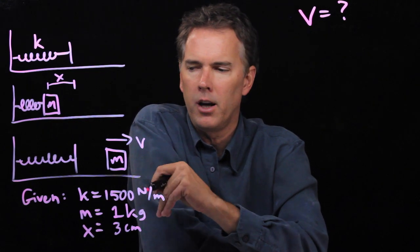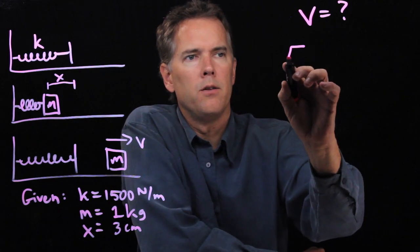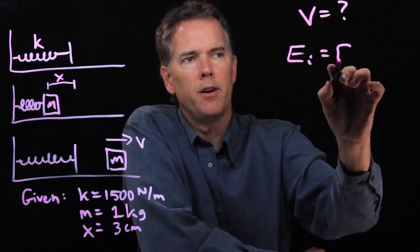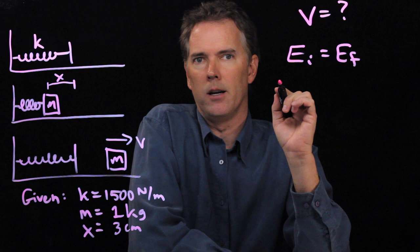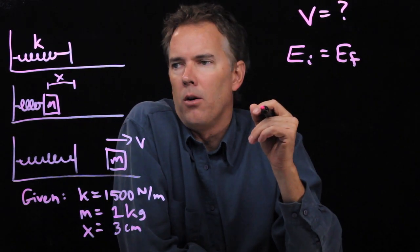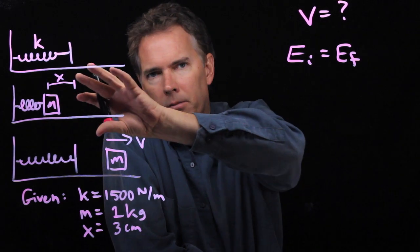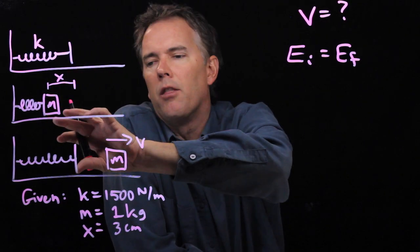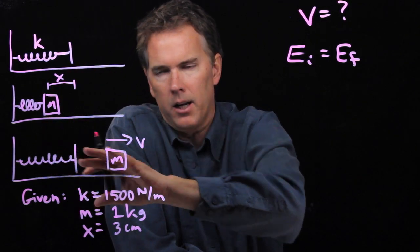Okay, so this is a conservation of energy problem. We need to write down conservation of energy, which is just E_i equals E_f. And then there's a bunch of terms in here, right? So the initial position is when the spring is compressed. The final position is when it is fully released.